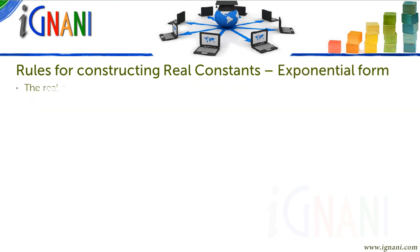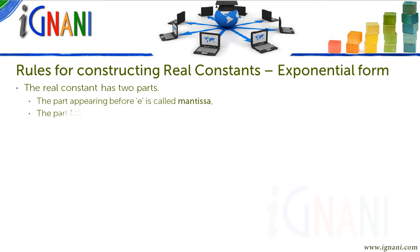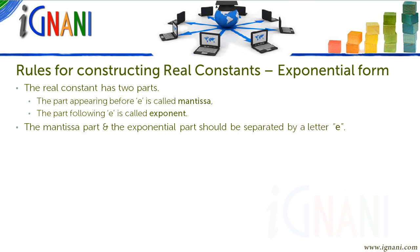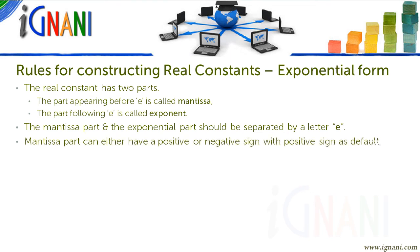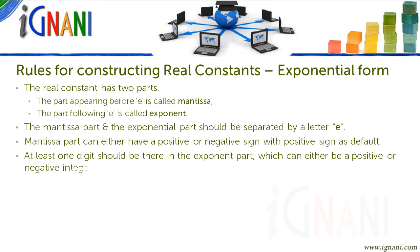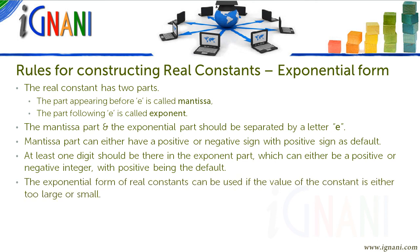In the exponential form, the real constant has 2 parts. The part appearing before E is called the mantissa, whereas the part following E is called the exponent. The mantissa part and the exponential part should be separated by the letter E. The mantissa part can either have a positive or negative sign, with positive being the default. At least 1 digit should be in the exponent part, which can either be a positive or negative integer, with positive being the default. The exponential form can be used if the value of the constant is either too large or too small, though nothing stops us from using it for other purposes. These are some examples of real constants in exponential form.